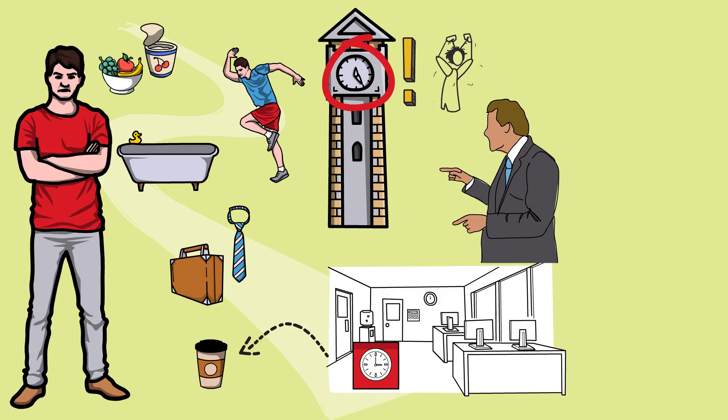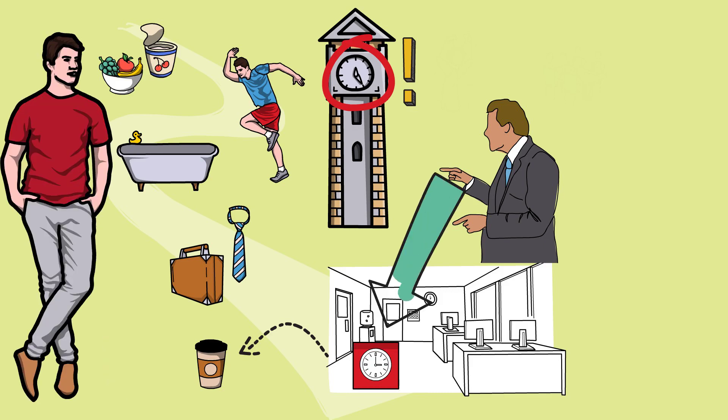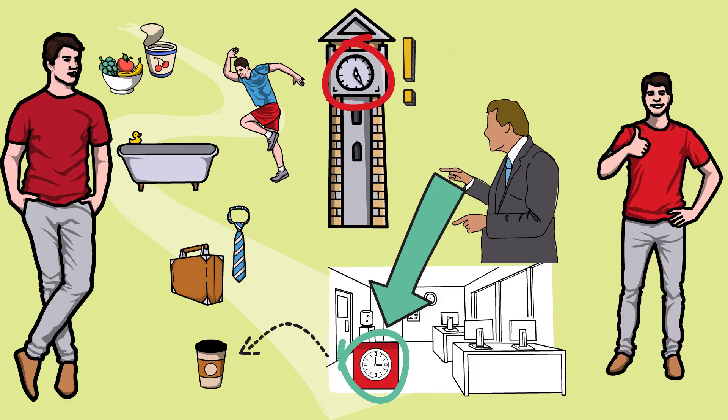Instead of arguing with the boss or asking for everybody else in the building to vouch for your on-time arrival, you prove this happened by showing your stamped time card. The proof is in the pudding, as they say. With official proof of the event happening, the boss cannot dispute you anymore, and you don't need the help of other colleagues because it is clear the event took place.